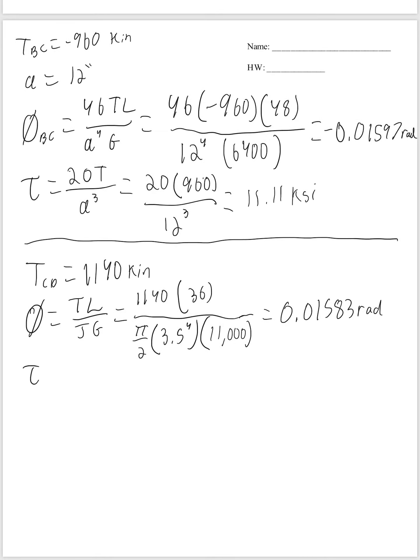And finally, our shear stress. That, we know, is just T rho over J. So if it wanted to find the minimum shear stress, it would be 0, because we could plug in 0 for rho, because it's a solid shaft. But it wants to find the maximum, so we're going to plug in our outer radius. So we have a torque, 1140, times rho, our radius, 3.5, over J. We have pi over 2, times 3.5 to the 4th. That gives us 16.73 KSI.